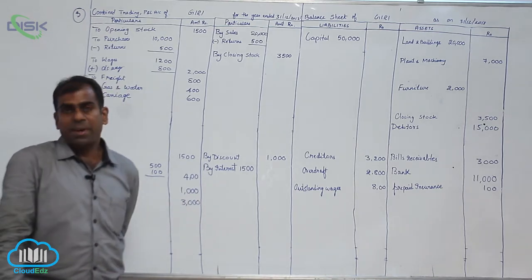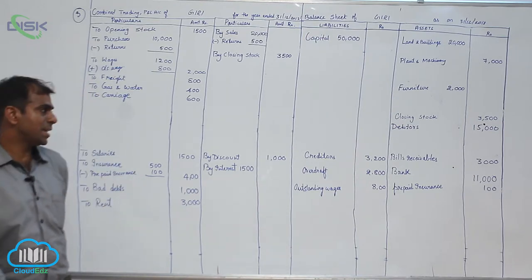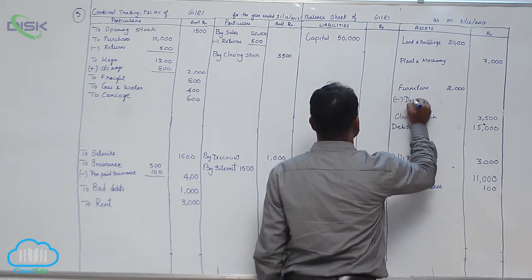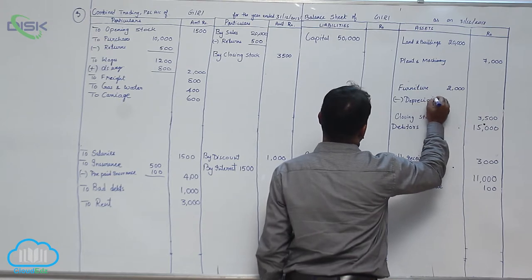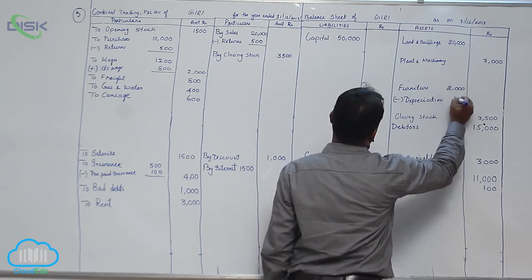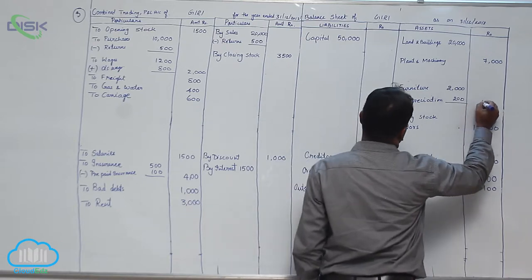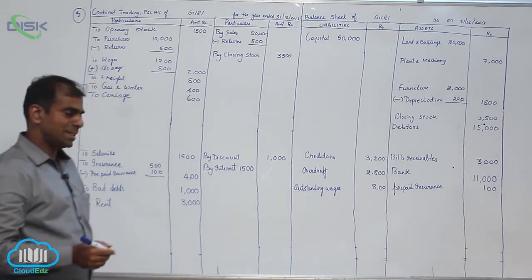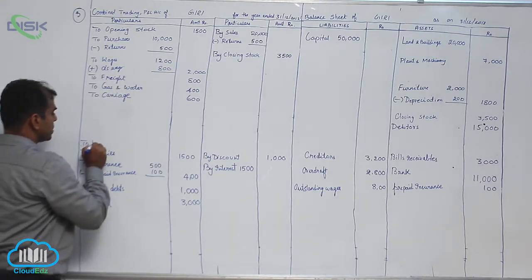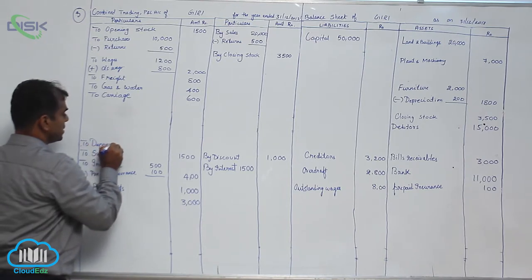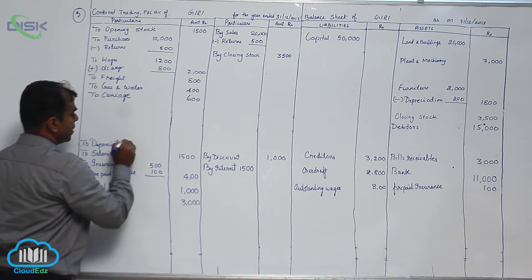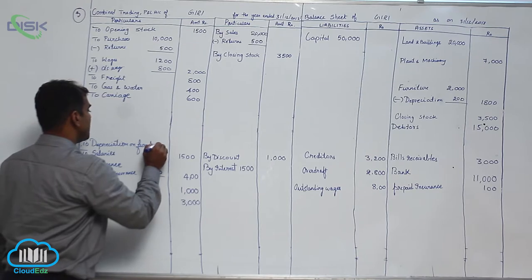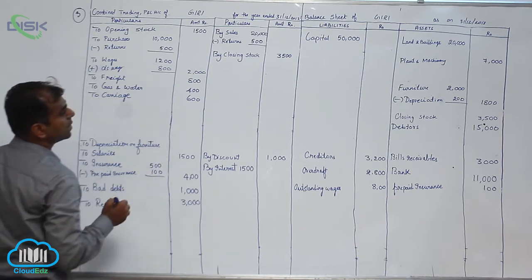Next, provide depreciation on furniture 10 percent. Depreciation we need to deduct from furniture - minus depreciation. 10 percent of 2000 is 200, making it 1800. The second effect of depreciation is we should show in P&L account because it is an expense - depreciation on furniture, the amount being 200.